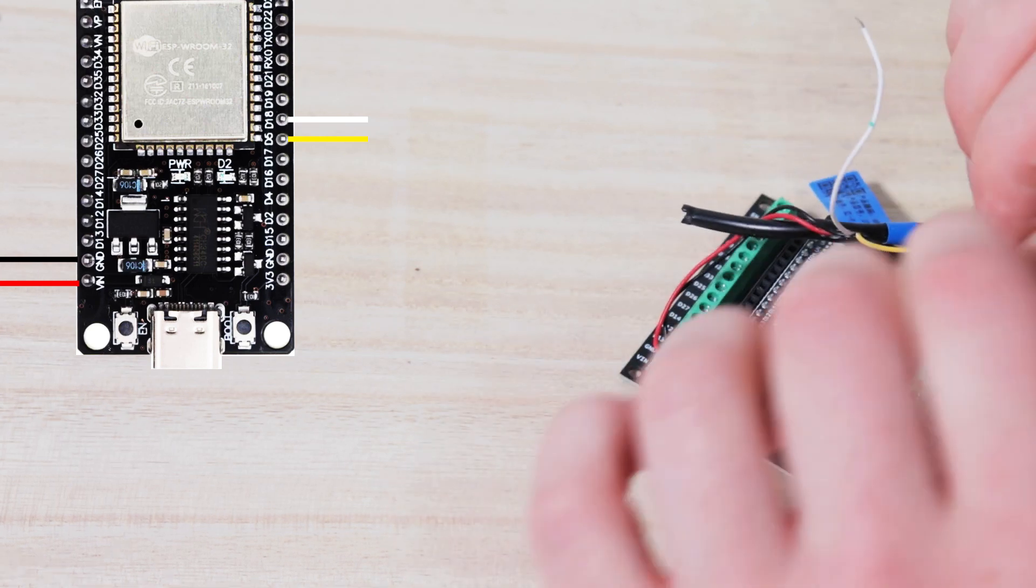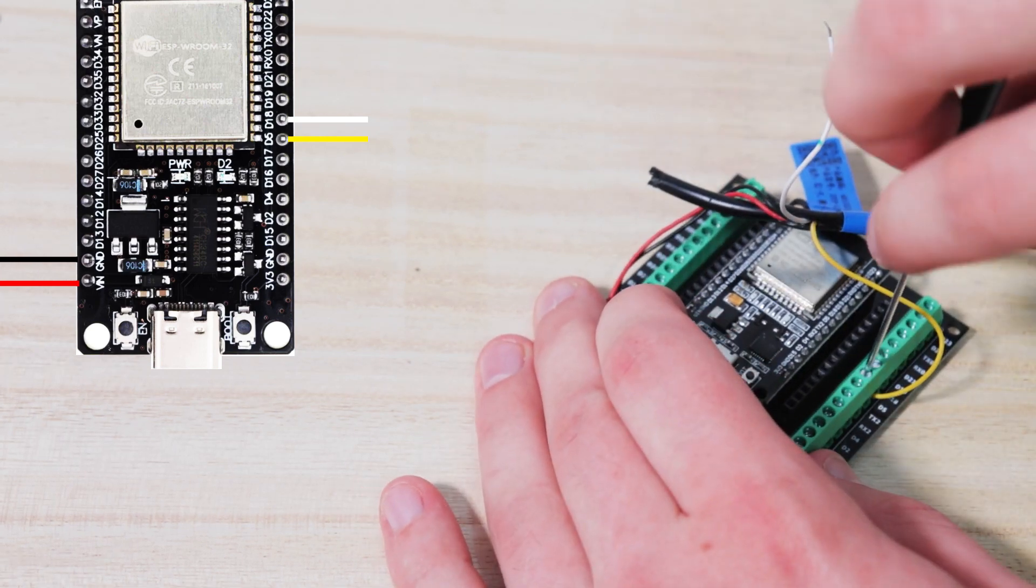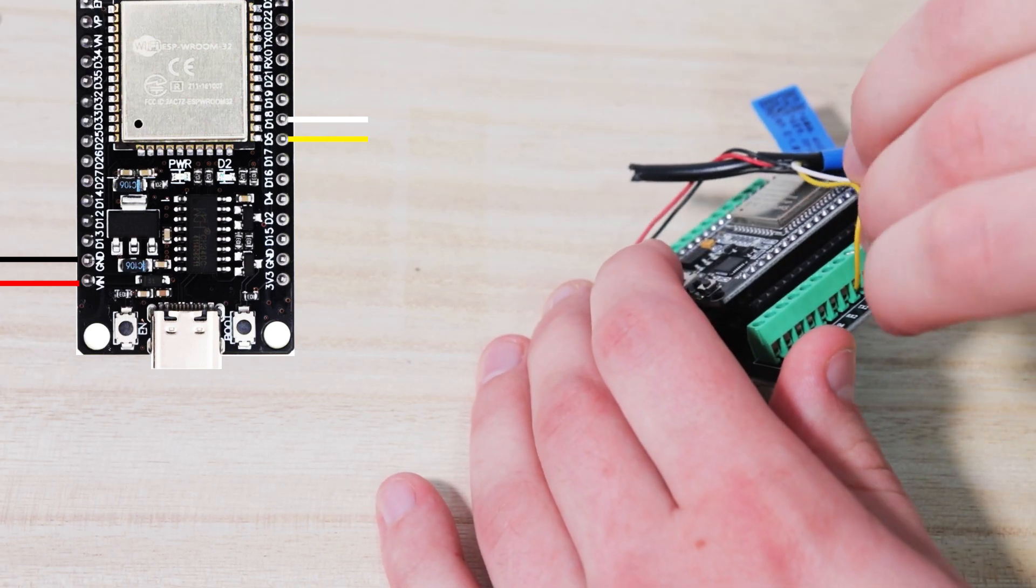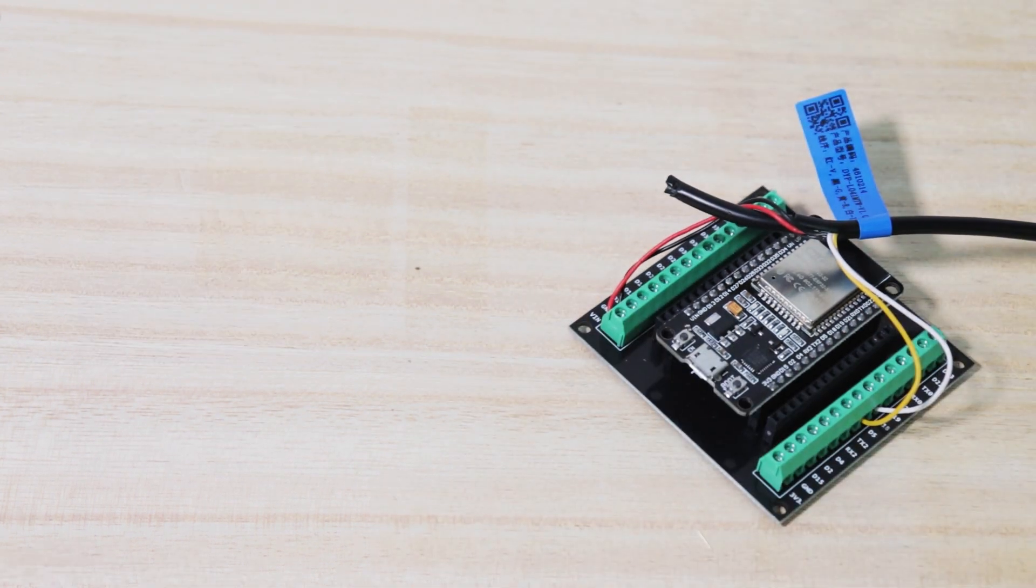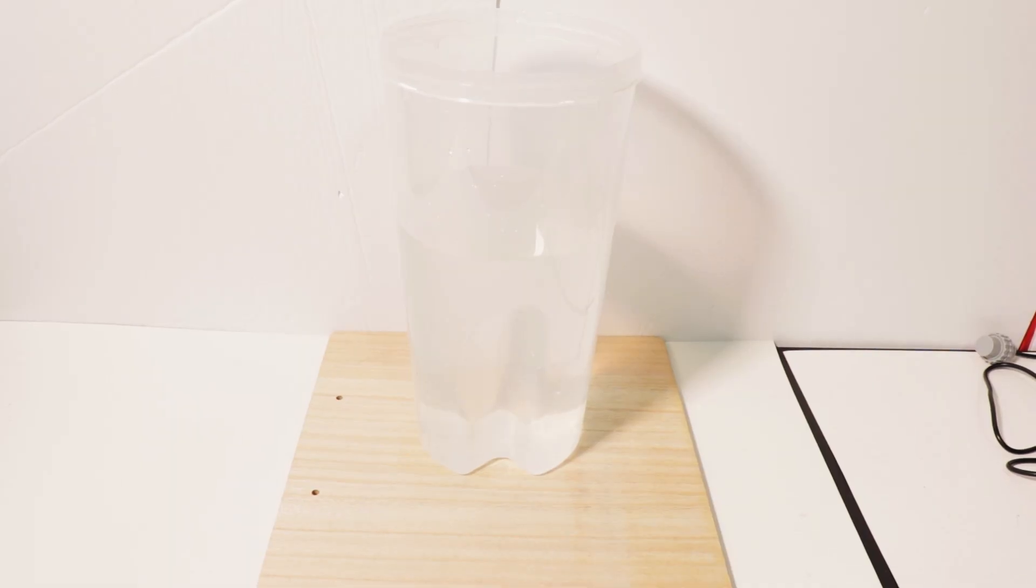Next up I'll be hooking up the data wires, with the white wire going into D18 and the yellow wire going into D5. I'll either end up chucking the code in the description, or a pinned comment for anyone who's curious.